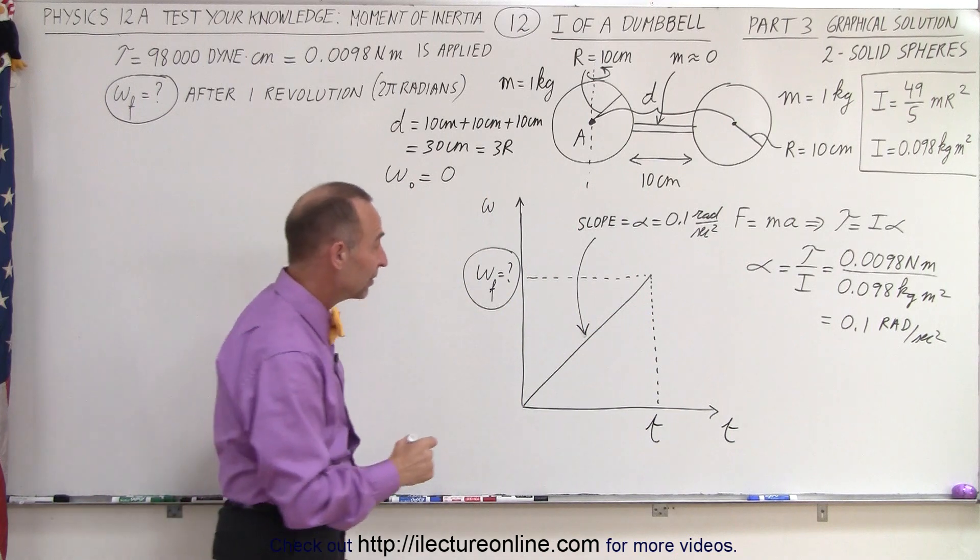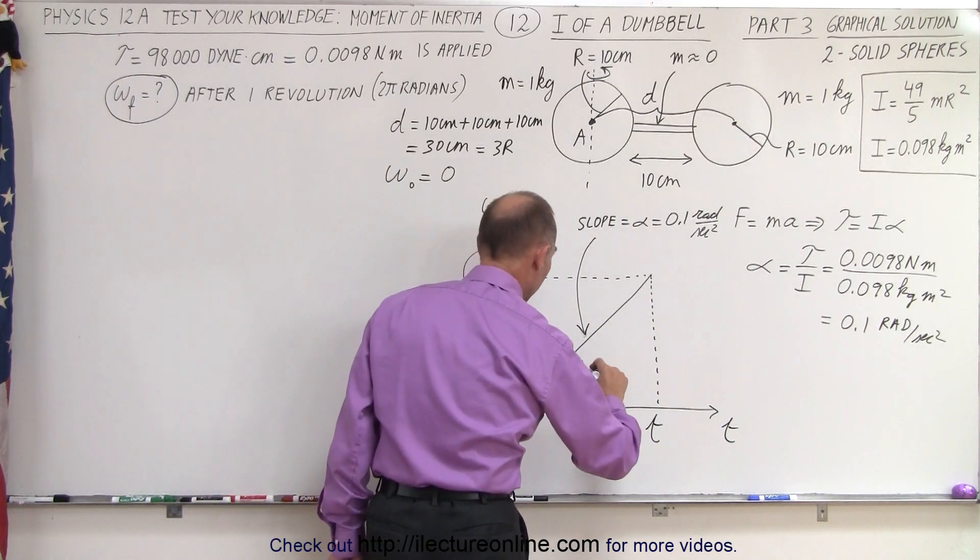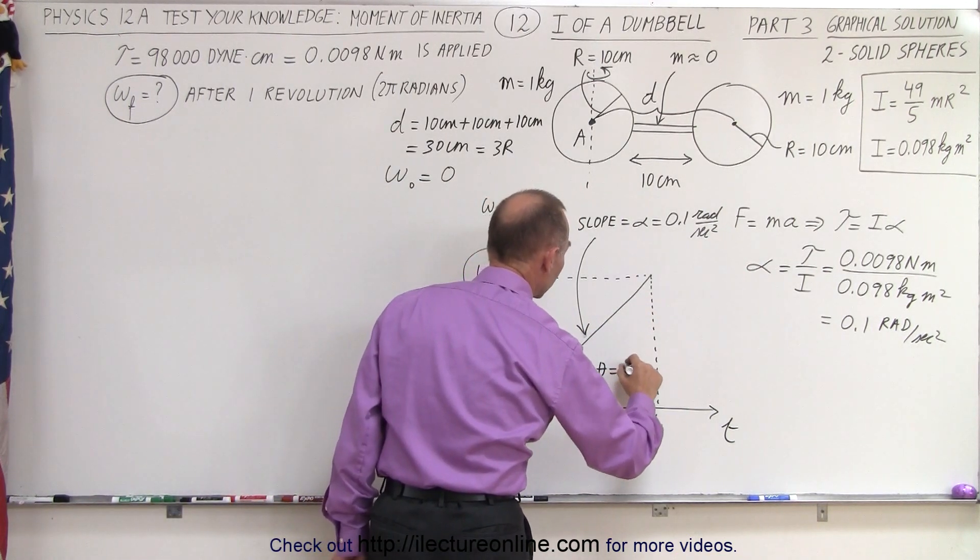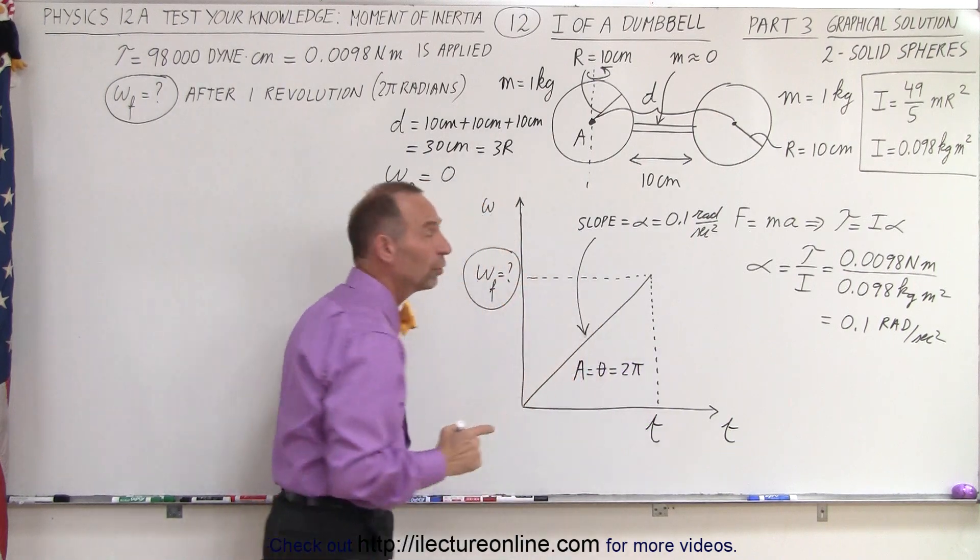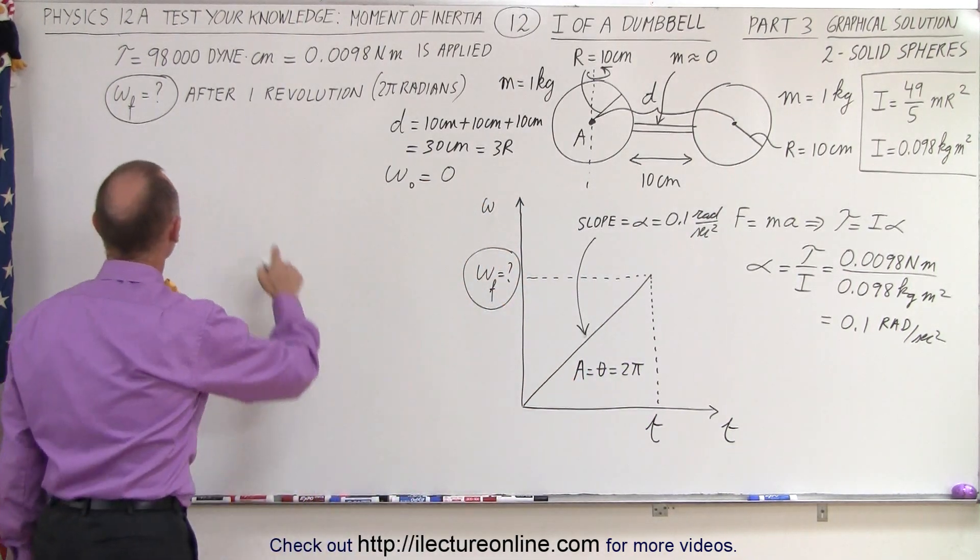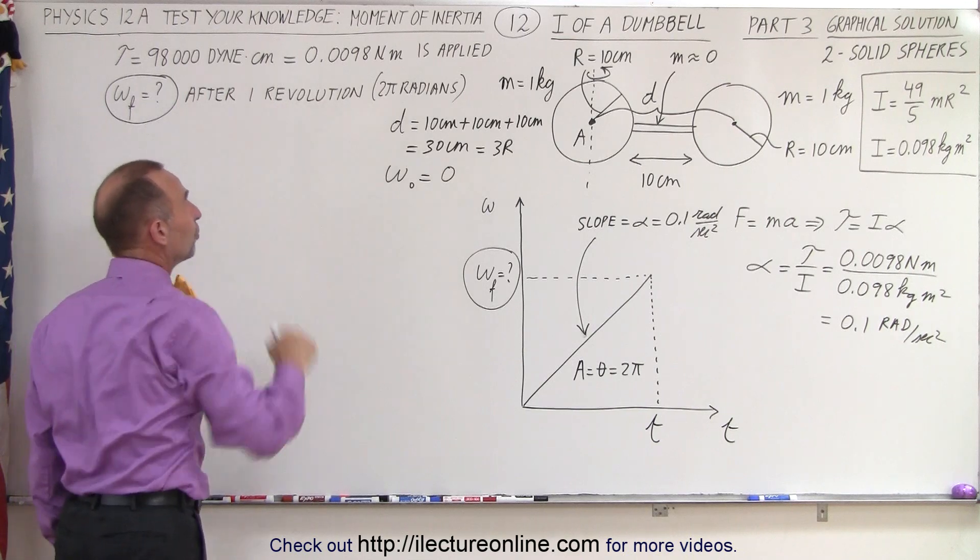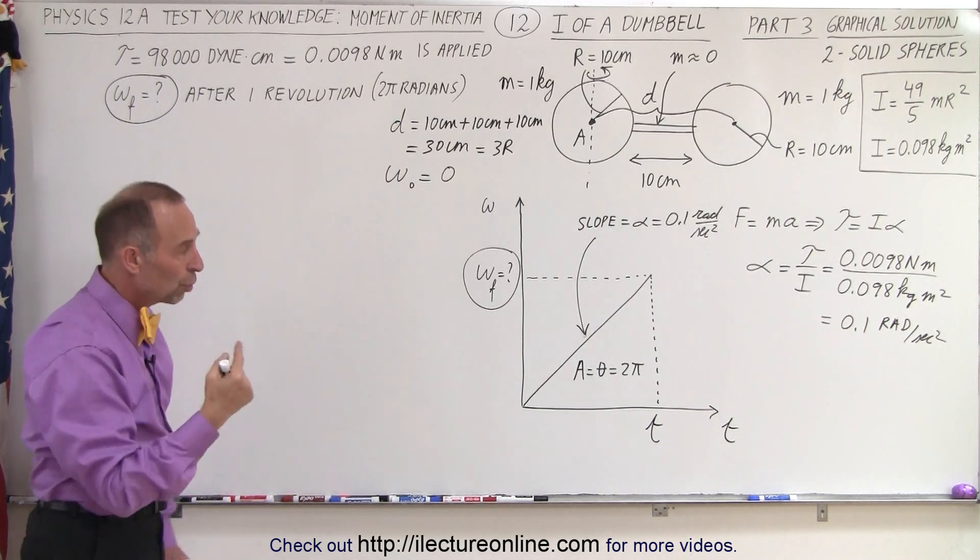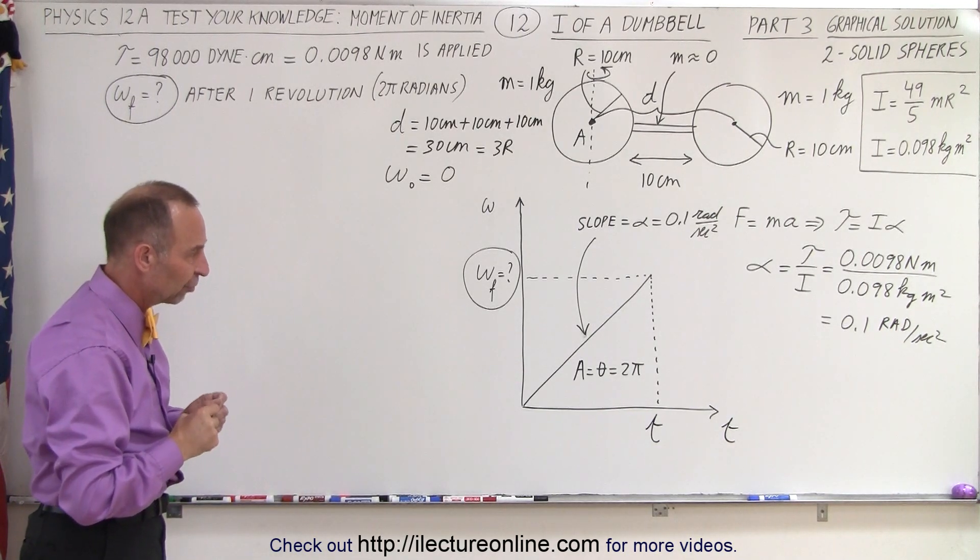And in the omega versus time graph, the area is equal to theta, which is equal to 2 pi, because we're told that we want to find the final omega after one revolution or 2 pi radians of motion, of angular displacement.